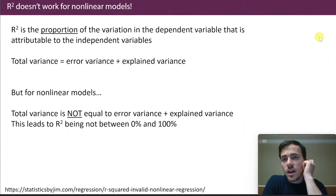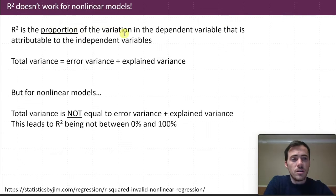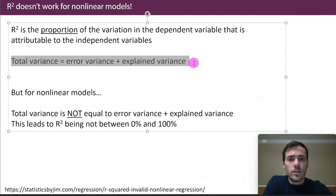So one of the challenges, why this doesn't work for linear models is because, again, R squared is defined as this proportion of the variation in your dependent variable that can be attributed to independent variables. Well, in linear models, we know that the total variance is equal to your error variance plus your explained variance, right?